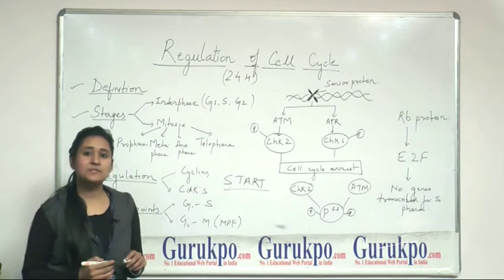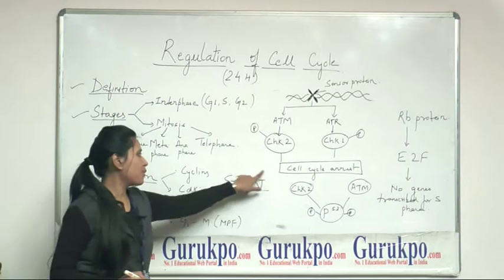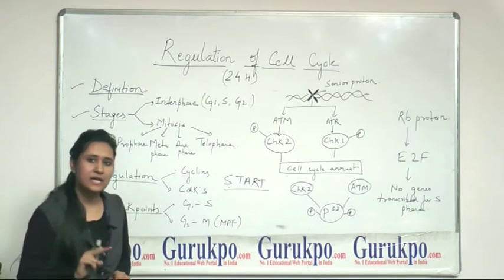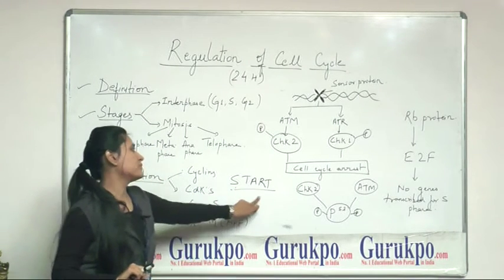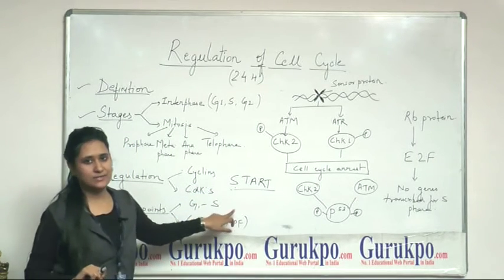This point helps in the transition from G1 to S-phase. And this transition will occur only when the appropriate cell size and nutrient availability will be present. So, if it is not present, the cell will not permit to enter from G1 to S-phase.